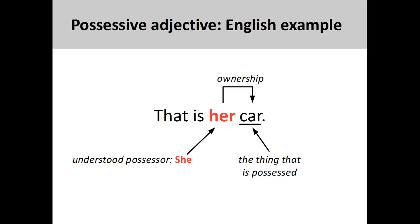In an earlier presentation, we saw that possessive adjectives show ownership of something or a relationship between things. We saw that these adjectives must be placed before the thing that is possessed. In this sentence, 'her' comes before 'car', indicating ownership of the vehicle. The adjective 'her' suggests that the person possessing the car is a woman. You may want to review that presentation before continuing with this one.